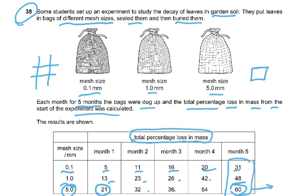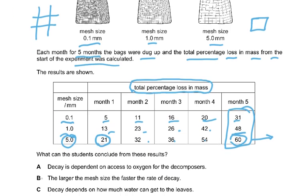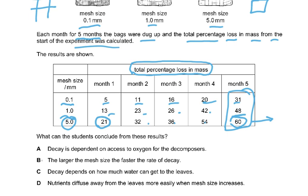What can students conclude from these results? The larger the mesh size, the faster the rate of decay. The option about oxygen access is not supported by these results alone — oxygen could also enter through small mesh sizes. Water and nutrient claims are also unsupported. Decay involves breaking down large insoluble substances into small soluble ones that return to the soil.